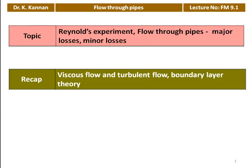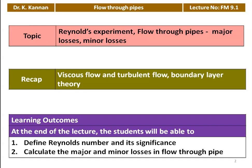We recap from the earlier lecture. In the previous lecture, we discussed about the laminar flow or the viscous flow, turbulent flow, and the boundary layer theory. The learning outcome for this lecture: at the end of the lecture, the student will be able to define the Reynolds number and its significance, and calculate the major and minor losses in flow through the pipe.